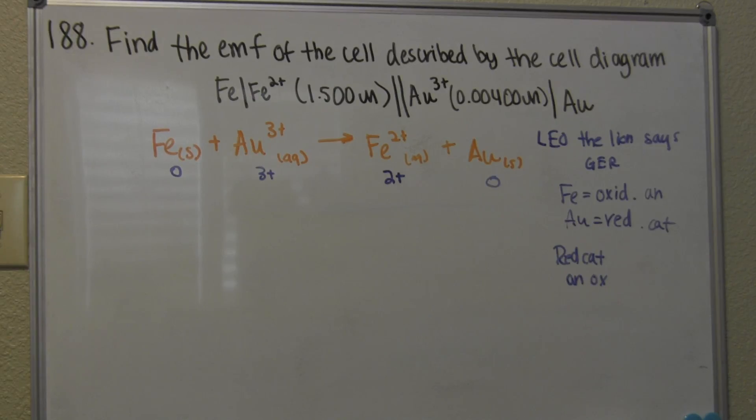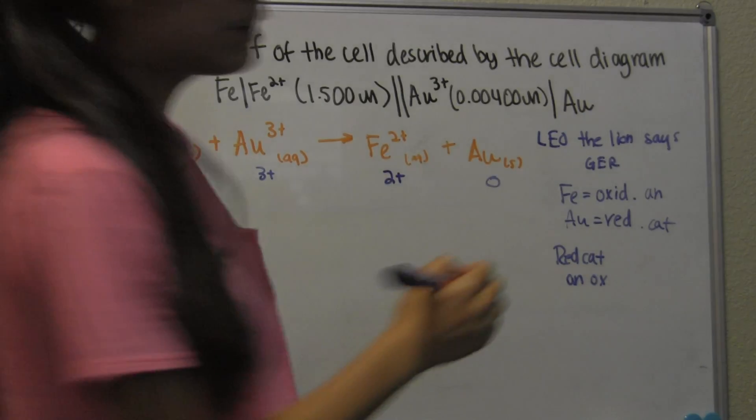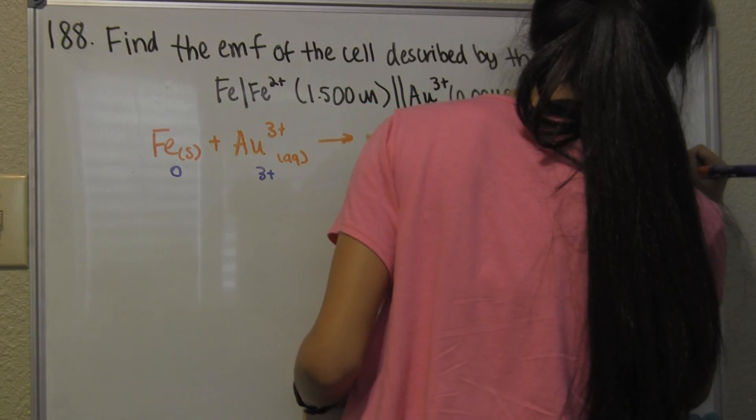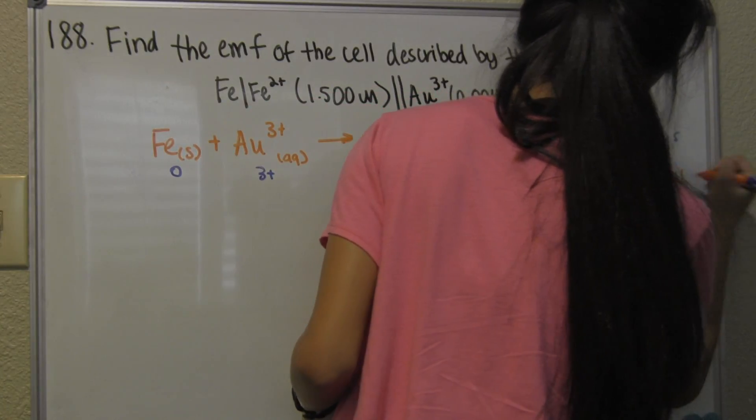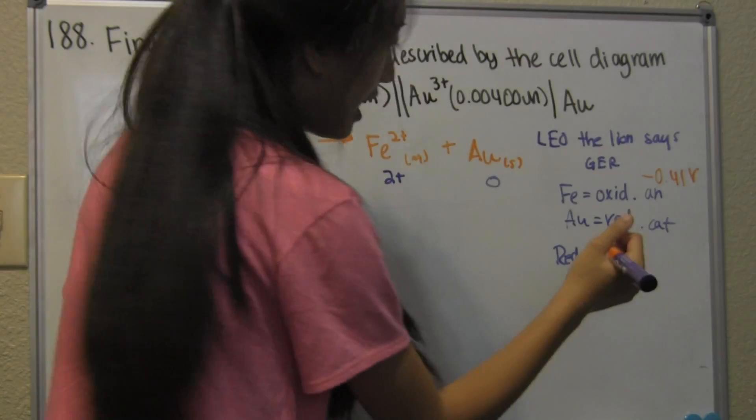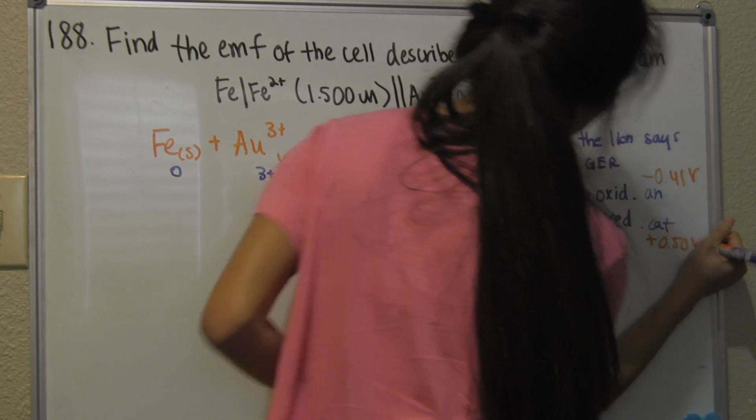Now that we have the anode and cathode, we need the standard reduction potentials. The standard reduction potential for Fe is negative 0.41 volts, and for Au it's plus 0.50 volts.